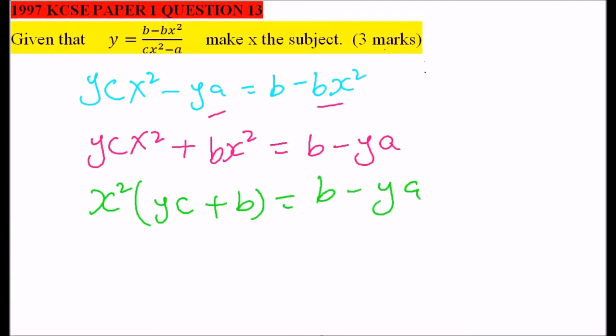Then from there, we divide both sides by yc plus b. So we have x squared on one side equals b minus ya, all this divided by yc plus b.